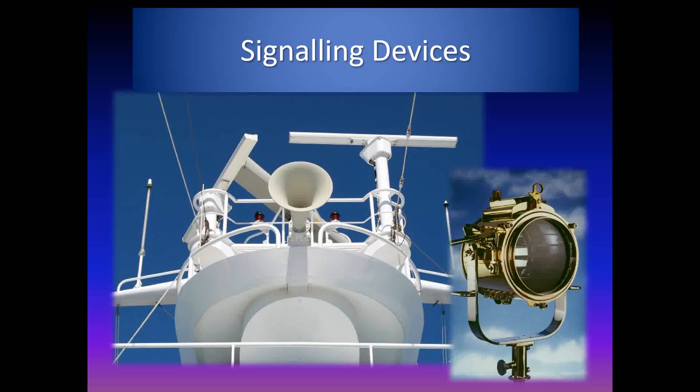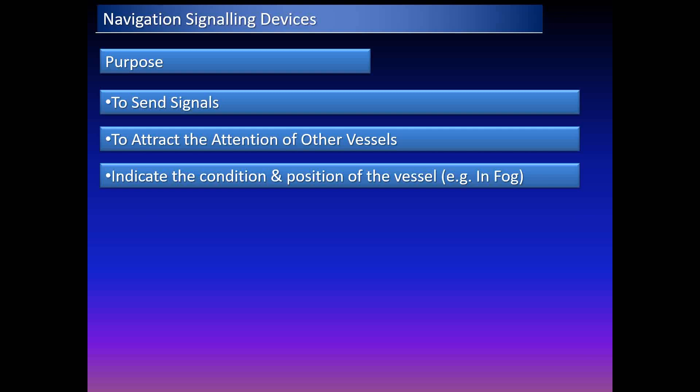Regarding signaling devices: per qualifications pertaining to lifesaving on board, pay particular attention to search-and-rescue ones, as it is a statutory requirement to carry an acceptable system of signaling devices. The bridge watchkeeper and ship's officer should be aware of the use, number, and location of signaling devices for use in both emergency and normal conditions. The purpose is to send signals to other vessels, attract their attention, indicate your own condition and position, and use sound signals in restricted visibility such as fog.